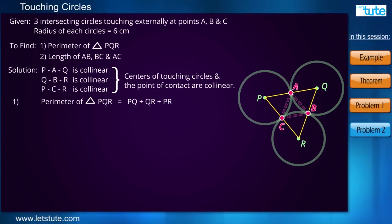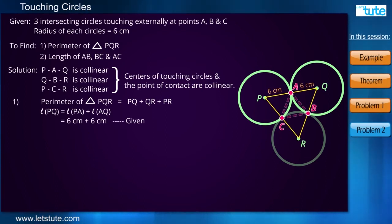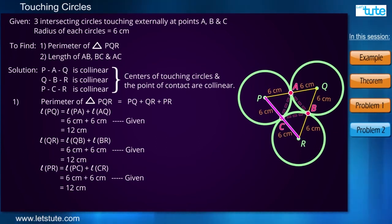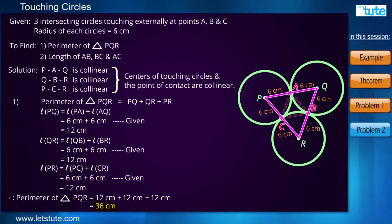Now in order to find the length of PQ, we need to add PA plus QA. Whereas PA and QA are nothing but the radii of the circles and we know the measure of them which is 6 cm. So the measure of PQ comes as 12 cm. And in the similar way, we can find the measure of QR and the measure of PR. Now by adding the measure of PQ, QR and PR, we will get the length of the perimeter of the triangle which is nothing but 36 cm.